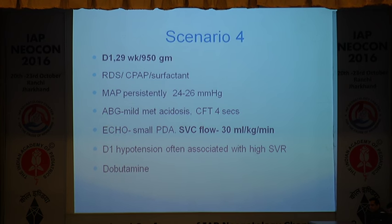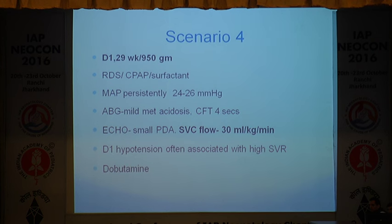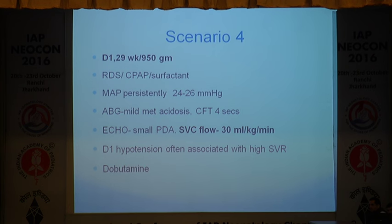The fourth case is a 29-week extremely low birthweight baby, day 1, with low blood pressure, RDS on CPAP, some mild metabolic acidosis, doubtful shock. Echo shows a small left atrium and low SVC flow — SVC flow should be at least 40 mL/kg/min. This is day-1 hypotension in an extremely preterm baby, because of removal of the low-pressure placenta; the heart has to pump against elevated SVR. Studies have shown that dobutamine is better in this clinical situation. There are also some reports saying dobutamine can be used here too.